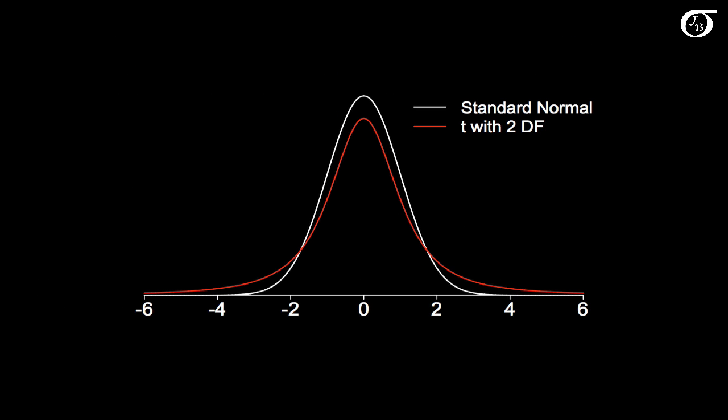I've looked at the similarities and differences between the t-distribution and the standard normal distribution elsewhere, but let's do a brief recap. The curve in white is the standard normal distribution, and the curve in red is a t-distribution with 2 degrees of freedom. Both distributions are symmetric about 0 and bell-shaped, but the t-distribution has heavier tails and a lower peak.